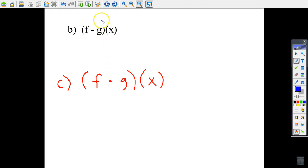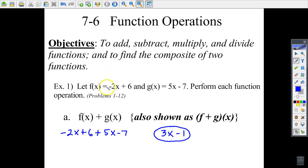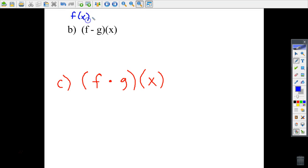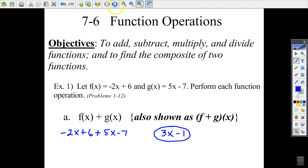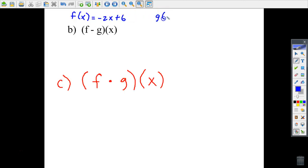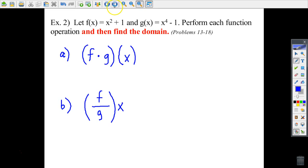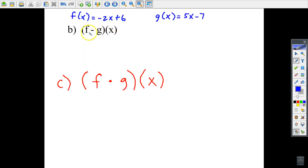We're going to use those same two functions that we used previously: f of x is negative 2x plus 6, and g of x is 5x minus 7. We're going to do the same thing, though this says to subtract the f function minus the g function. So you do need to be careful with subtraction.